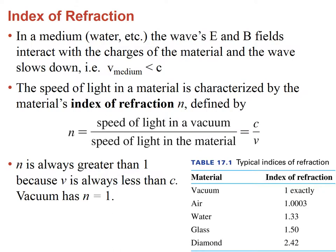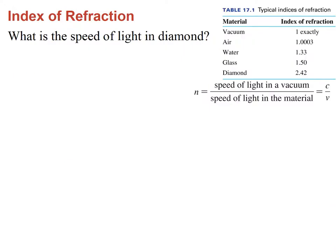Here are some values of the index of refraction: for vacuum, n = 1 exactly; for air, just slightly more; and for diamond, n = 2.42. We'll see that it is because of this property that diamonds are so expensive. The high index of 2.42 means there is a lot of bending of light as it goes from air into diamond, making it sparkle — and because of that, people pay a lot of money for them.